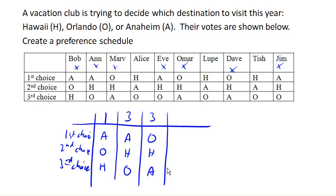H-A-O looks like it's next, and we've got three people who voted that way. So this is our entire preference schedule.